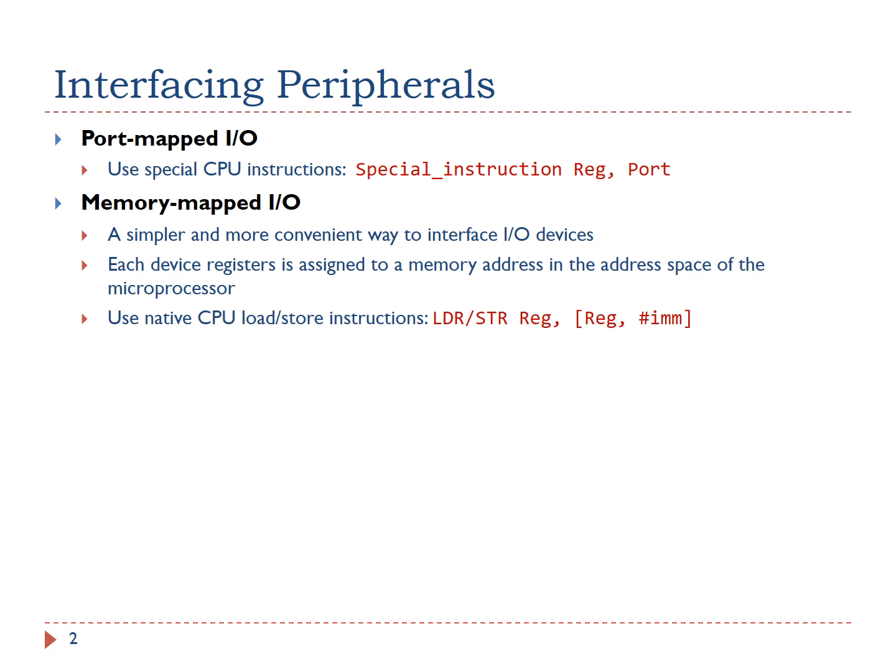In general, there are two approaches to exchange data between the processor core and a peripheral device, including Port Mapped I/O, and Memory Mapped I/O. Port Mapped I/O uses special CPU instructions which are designed specifically for I/O operations.